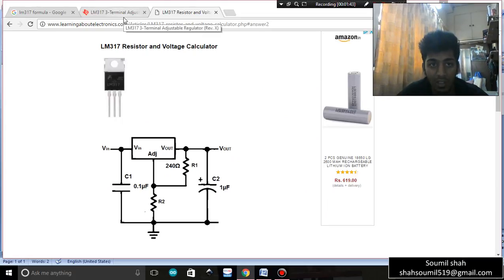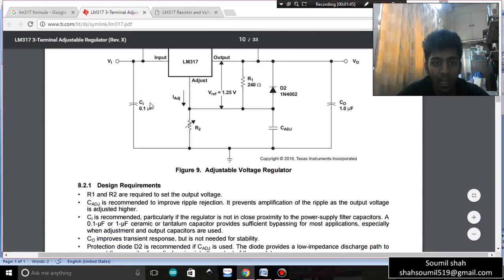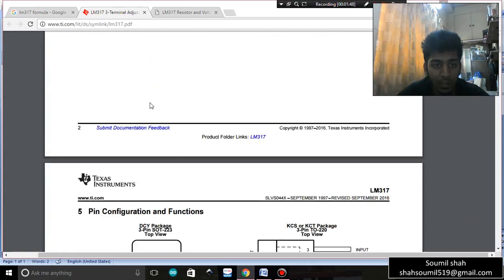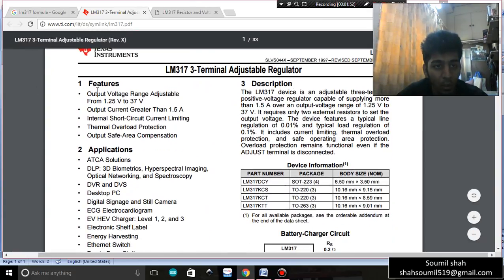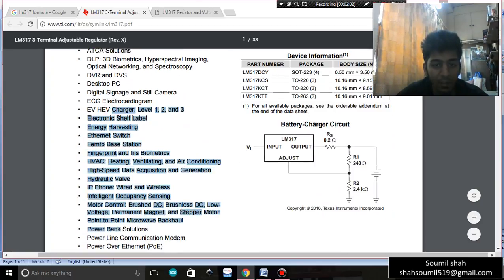Here you can have a look at the datasheet of LM317 for more details. What are the applications of LM317? You can look at the features of LM317. The output voltage range is adjustable from 1.25 to 37 volts with a current greater than 1.5 amps. These are some of the common applications for LM317.